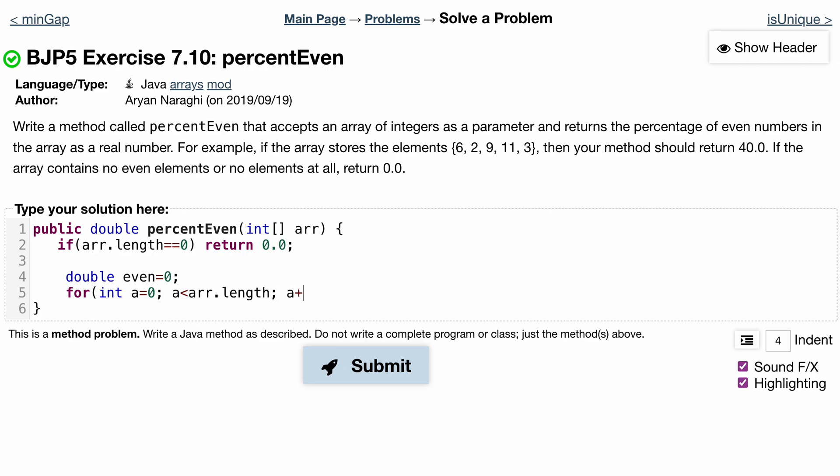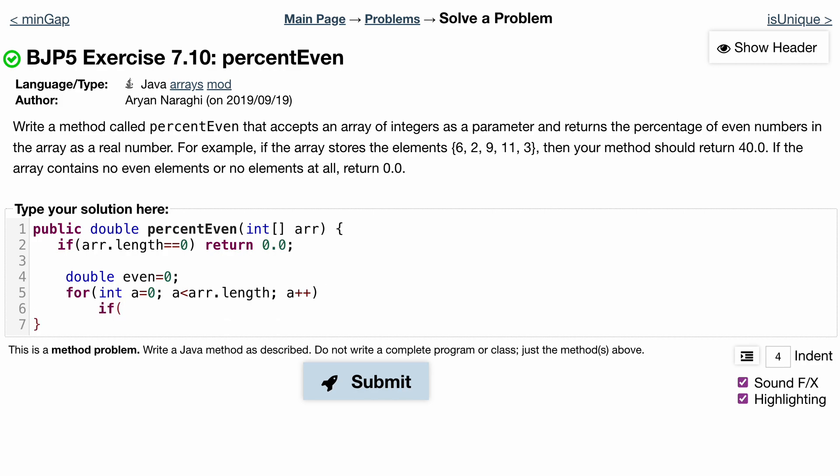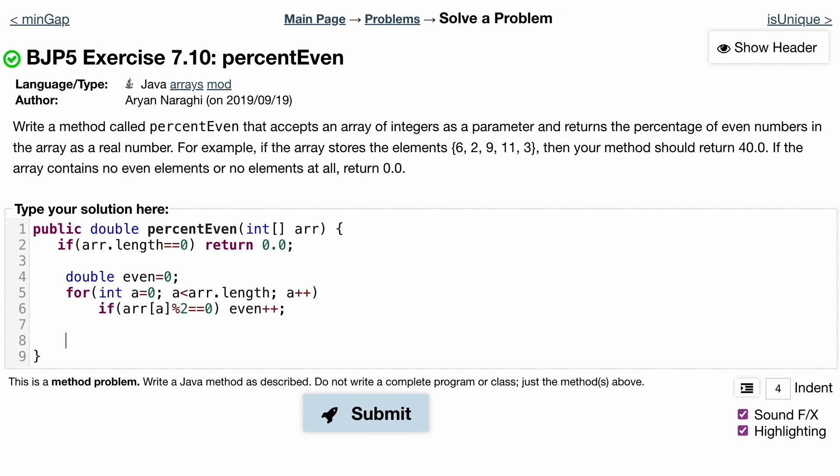Now inside of here we're going to want an if statement. This is going to check if it's even or not. If our element at the a index is modulus 2, if it has a remainder that means it is odd because we're dividing it by 2 and it should be 0. So if it is equal to 0, we'll just have even++.